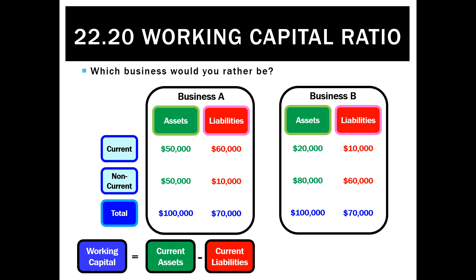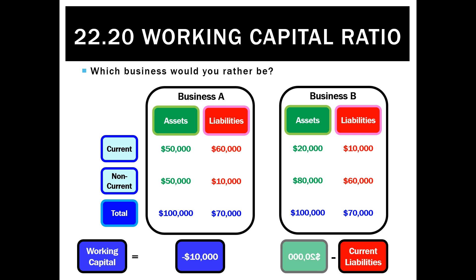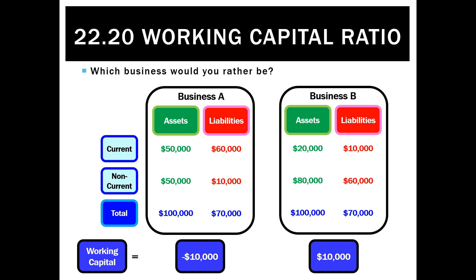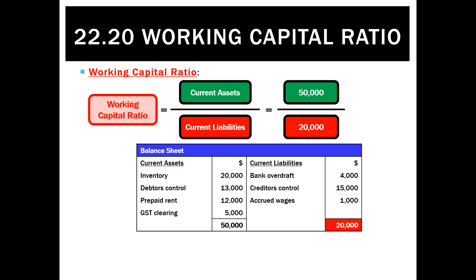Looking at working capital — current assets less current liabilities — for business A it was $50,000 less $60,000, giving negative working capital of $10,000. Business B, on the other hand, ends up with positive working capital of $10,000. We want to express this as a ratio, so we calculate the working capital ratio as current assets divided by current liabilities. From the balance sheet example, we have current assets of $50,000 and current liabilities of $20,000, giving a ratio of 2.5 to 1.